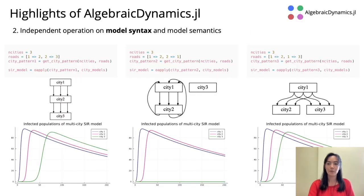The second primary advantage of AlgebraicDynamics is the clear delineation between model syntax and model semantics, and this allows us to independently operate on model syntax and model semantics to produce different complete models. In our original example, we had this diagram of systems with people flowing from city 1 to city 2 and then from city 2 to city 3. This was specified in a single line of code.